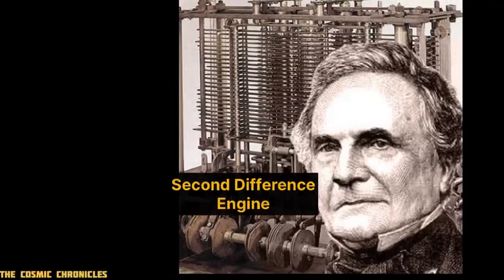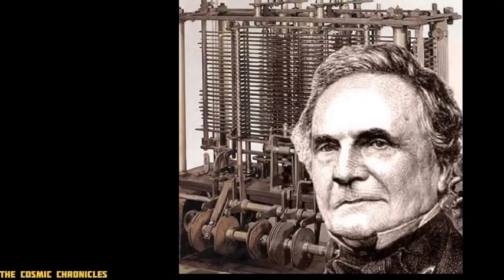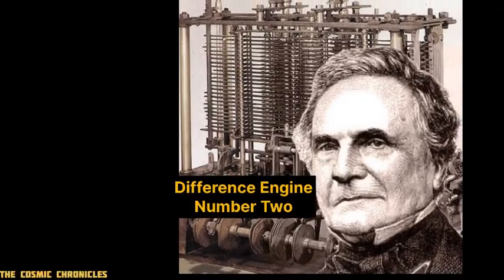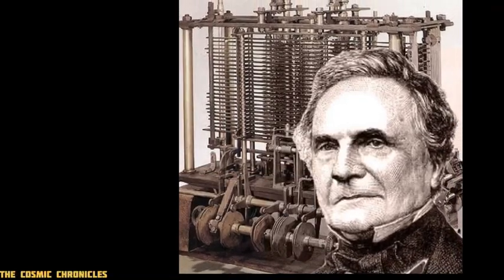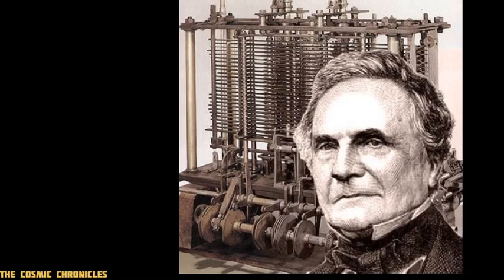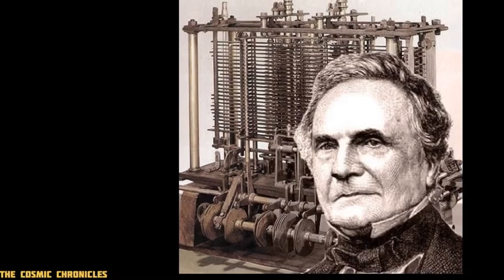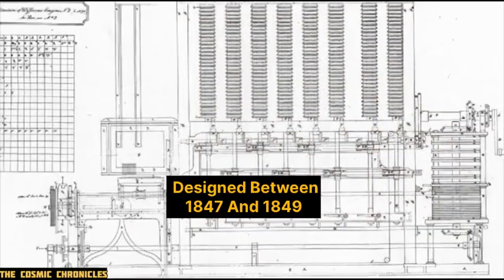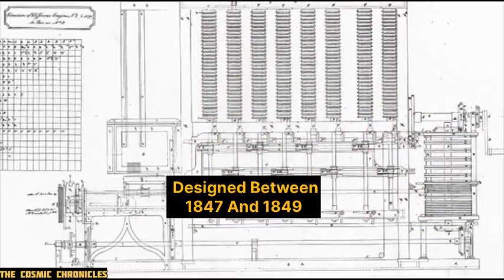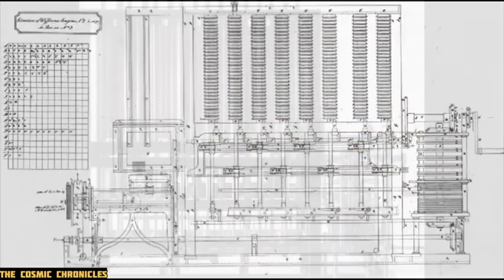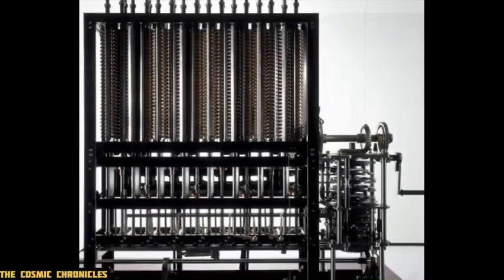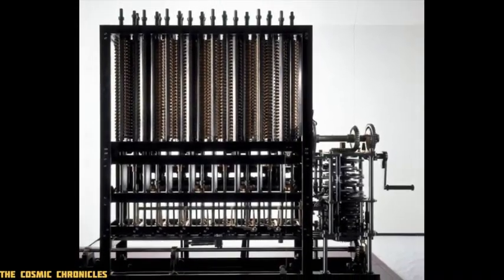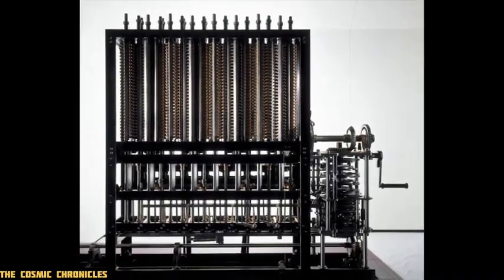Charles Babbage's second Difference Engine, known as Difference Engine No. 2, was an advanced version of his original calculating machine. Designed between 1847 and 1849, this engine was a refinement of the concepts he developed for his first Difference Engine.